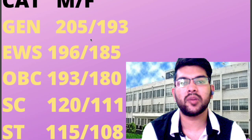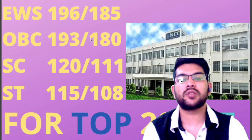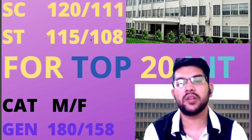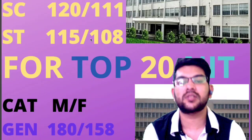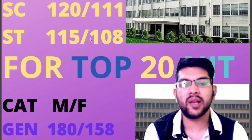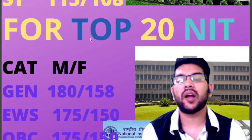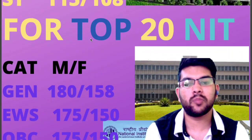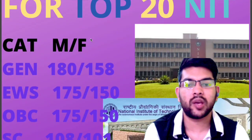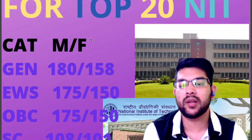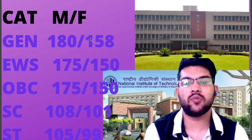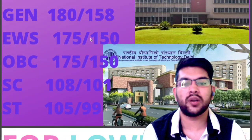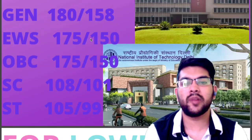For top 20 NITs, the safe scores are: General — 180 (male) and 158 (female); EWS — 175 (male) and 150 (female); OBC — 175 (male) and 150 (female); SC — 108 (male) and 101 (female); ST — 105 (male) and 99 (female).